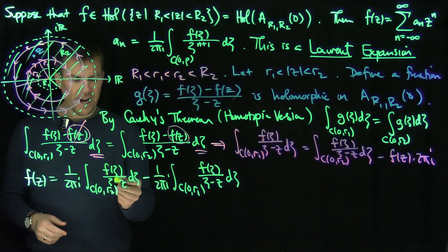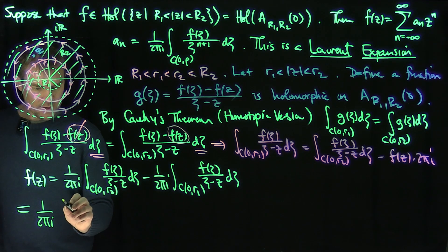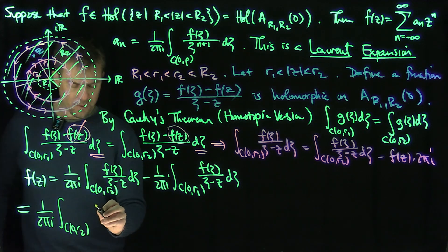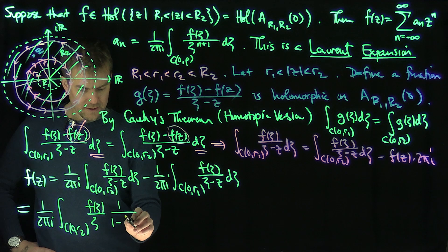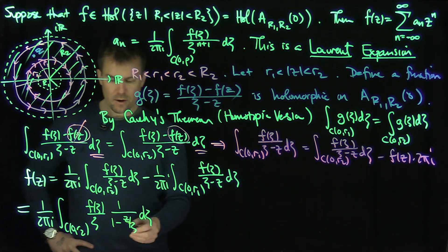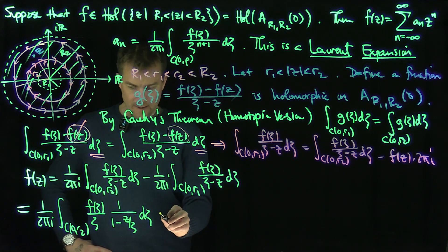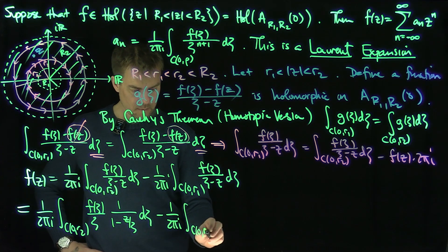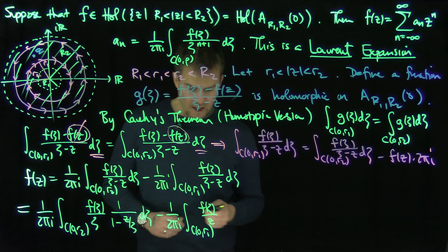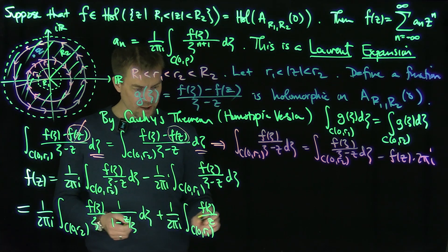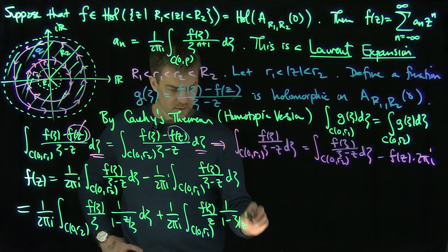On the circle r2, we know |ζ| > |z|, so I pull out a ζ and write 1/(ζ−z) = (1/ζ)·1/(1 − z/ζ). Since |z/ζ| < 1, I can expand this as a geometric series. For the circle r1 integral, I flip the sign, pull out z, and write 1/(ζ−z) in terms of 1/(1 − ζ/z) — and since ζ is on R1 and |z| > r1, we have |ζ/z| < 1, so that is also expandable.